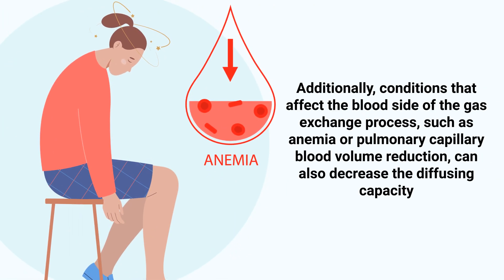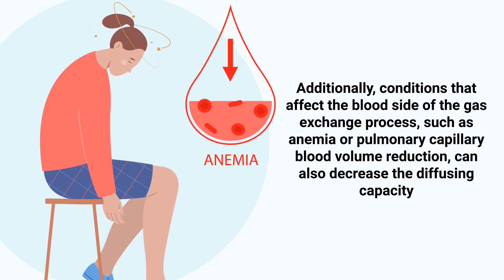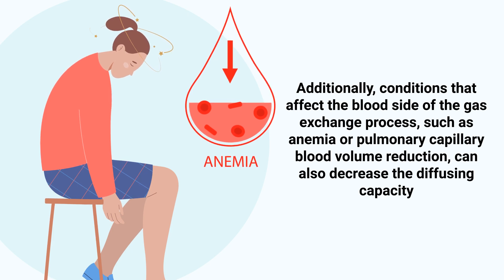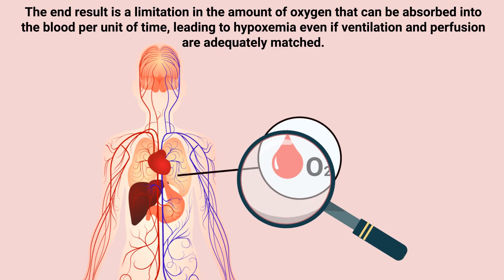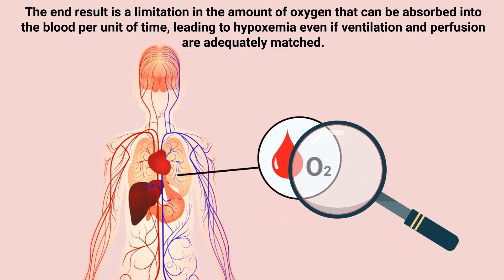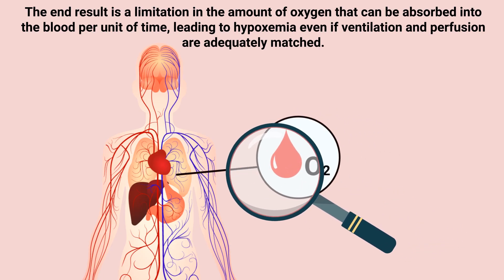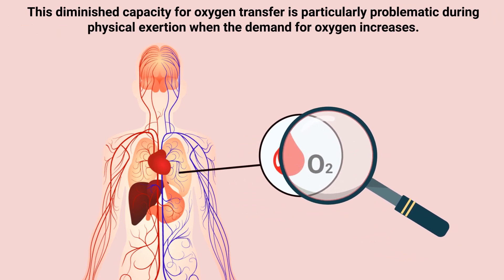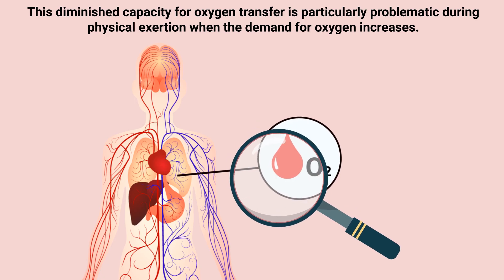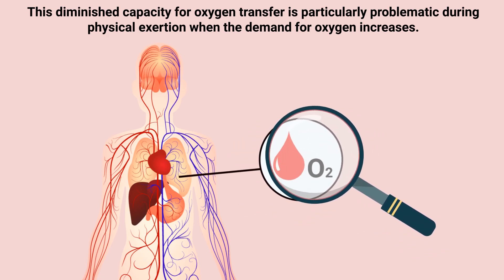Additionally, conditions that affect the blood side of the gas exchange process, such as anemia or pulmonary capillary blood volume reduction, can decrease the diffusing capacity. The end result is a limitation in the amount of oxygen that can be absorbed into the blood per unit of time, leading to hypoxemia even if ventilation and perfusion are adequately matched. The diminished capacity for oxygen transfer is particularly problematic during physical exertion, when the demand for oxygen increases.